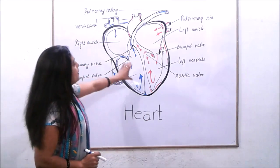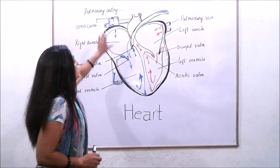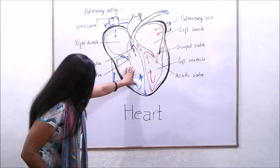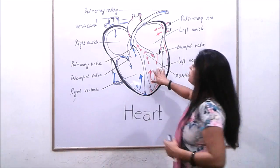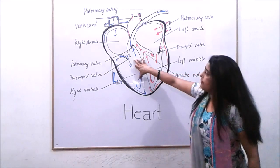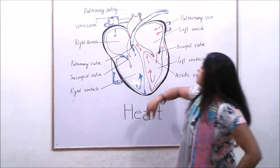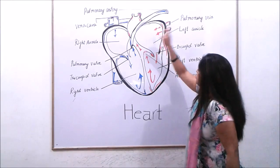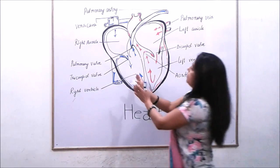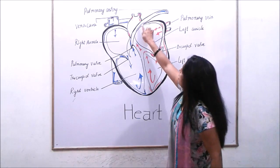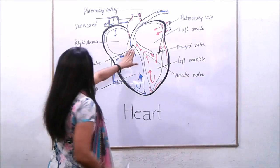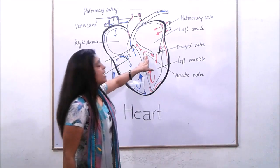Those were the parts of the heart. The four chambers are: right auricle and left auricle as the upper ones, and right ventricle and left ventricle as the lower ones. There are four valves: the tricuspid valve connecting the right auricle to the right ventricle, the bicuspid valve connecting the left auricle to the left ventricle, the pulmonary valve connecting the right ventricle to the pulmonary artery, and the aortic valve.